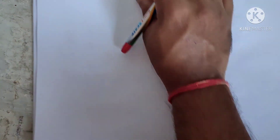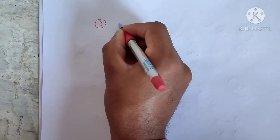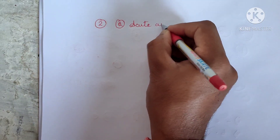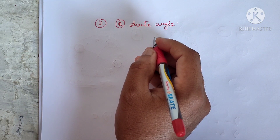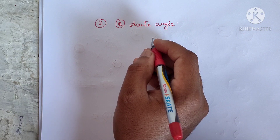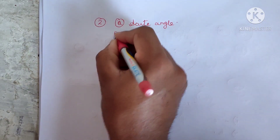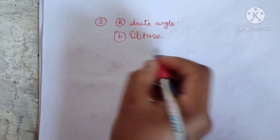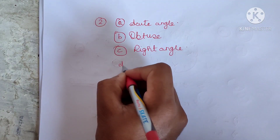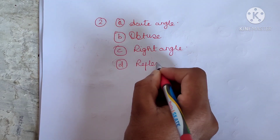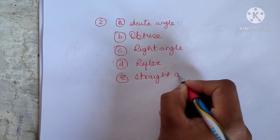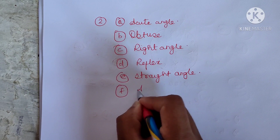For number two in Exercise 5.3, the answers are: (a) acute angle, (b) obtuse angle, (c) right angle, (d) reflex angle, (e) straight angle, (f) acute angle. You can write these in your textbook — no need to copy into your notebook for Exercise 5.2.